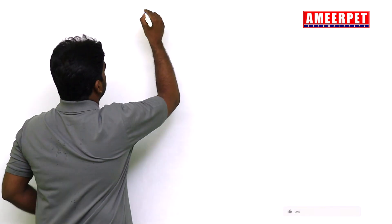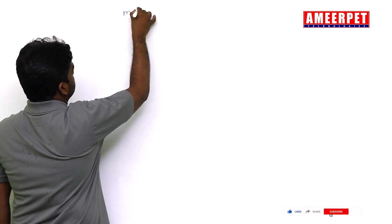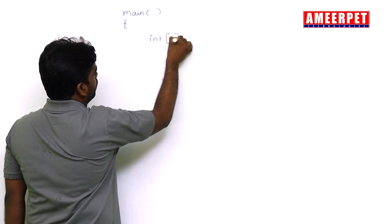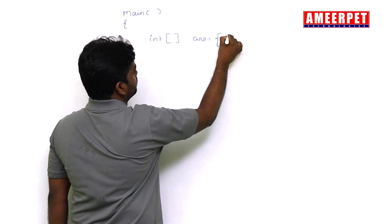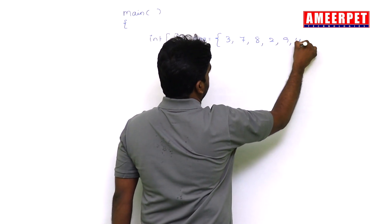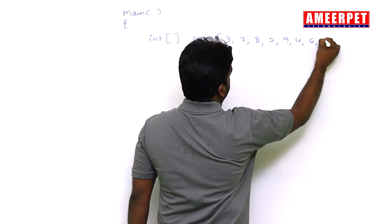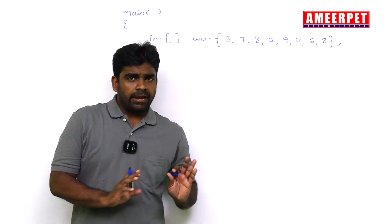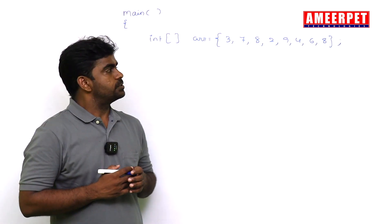Hi everyone, this is Srinivas, welcome from Repeat Technologies. In this video I am going to explain some basic examples working with Java arrays in this continuation series. I am using one fixed array for all operations — the array contains values: 3, 7, 8, 2, 9, 4, 6, 8 — and I want to use this array for all the remaining concepts as well.